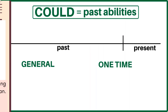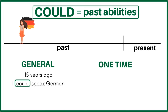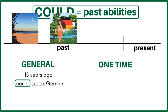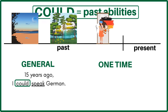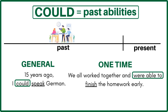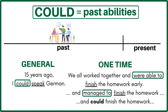Let's compare again. General past ability: '15 years ago, I could speak German' — in the morning, in the afternoon, any time. One-time past ability: 'We all worked together and were able to finish the homework early' — or 'managed to finish the homework early.' Saying 'could finish the homework early' in that context is not so natural. So for one-time past achievements in affirmative sentences, use 'was/were able to' or 'managed to.'